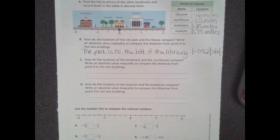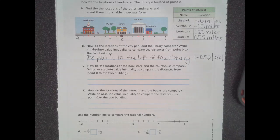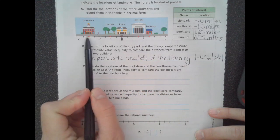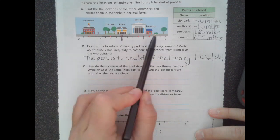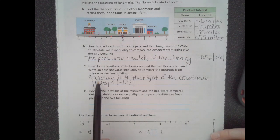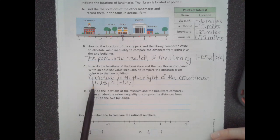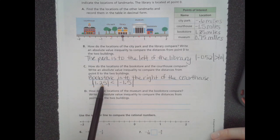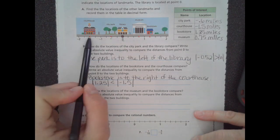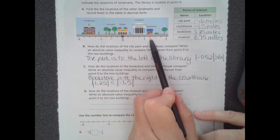Question C: how do the locations of the bookstore and courthouse compare? Write an absolute value inequality to compare the distances from zero to the two buildings. The bookstore is to the right of the courthouse. The absolute value of 1 and 25 hundredths is less than the absolute value of negative 1 and 5 tenths, because 1.5 miles is farther from zero than 1.25 miles.